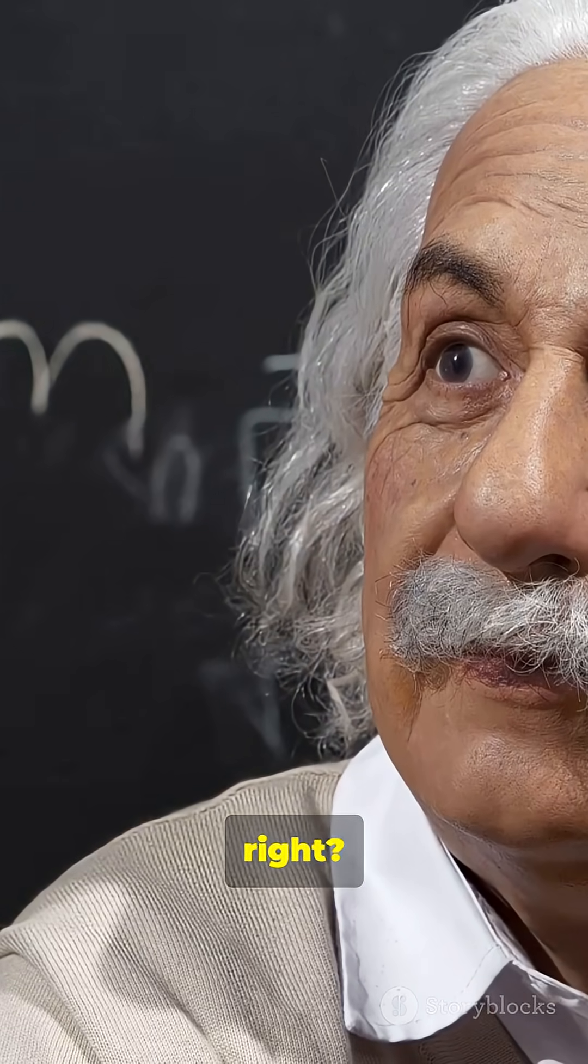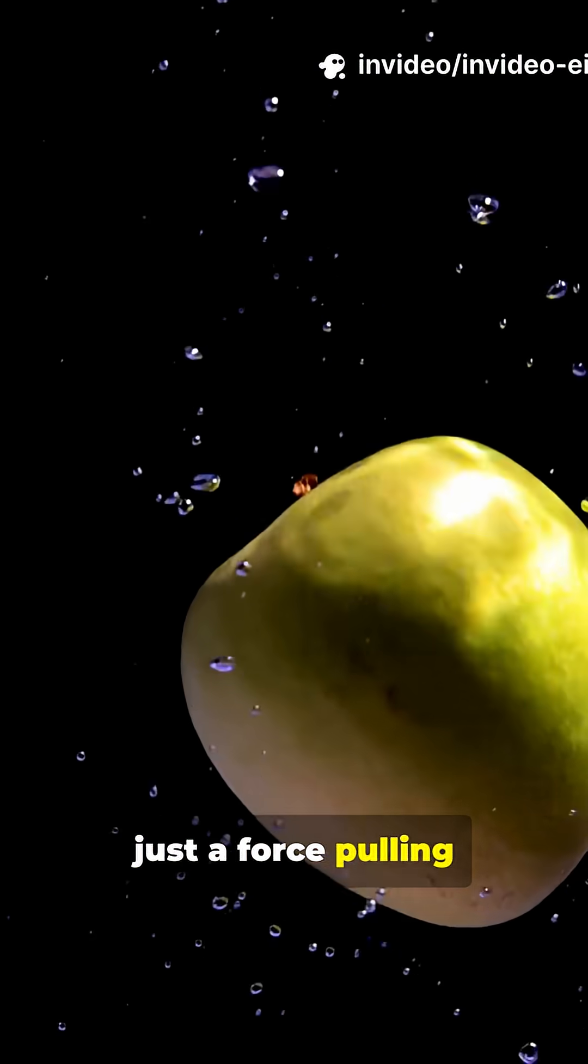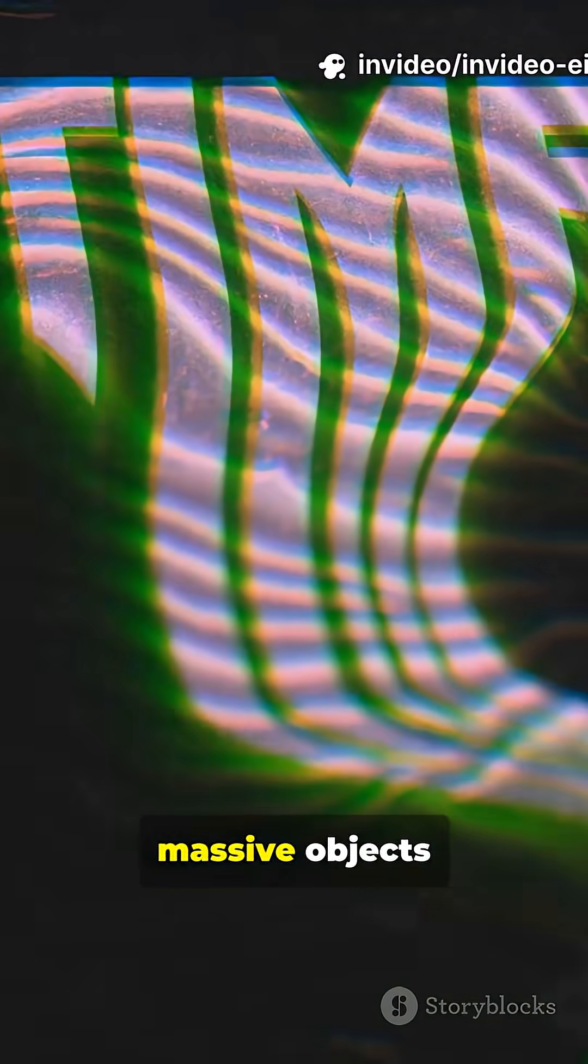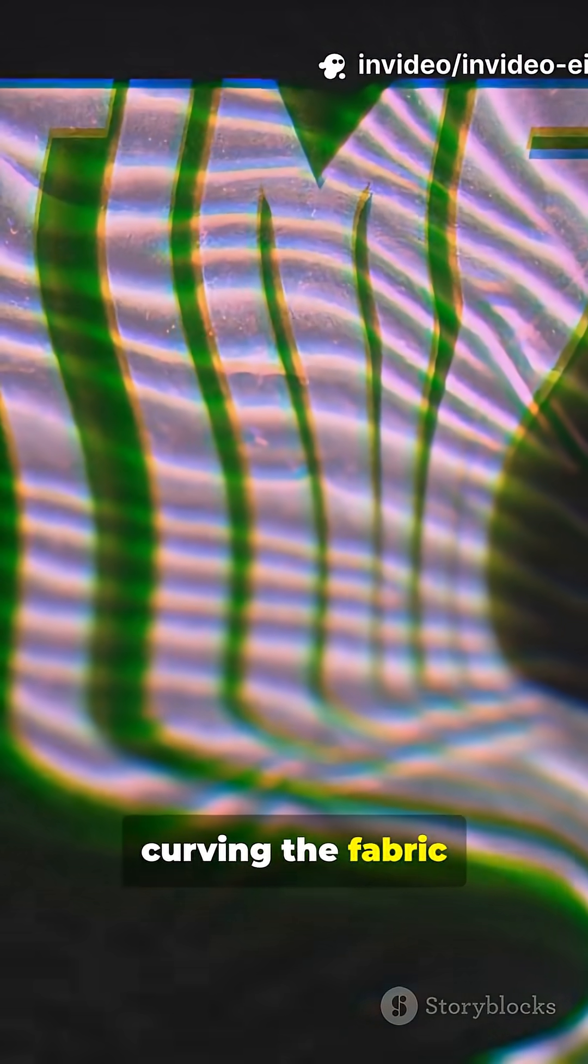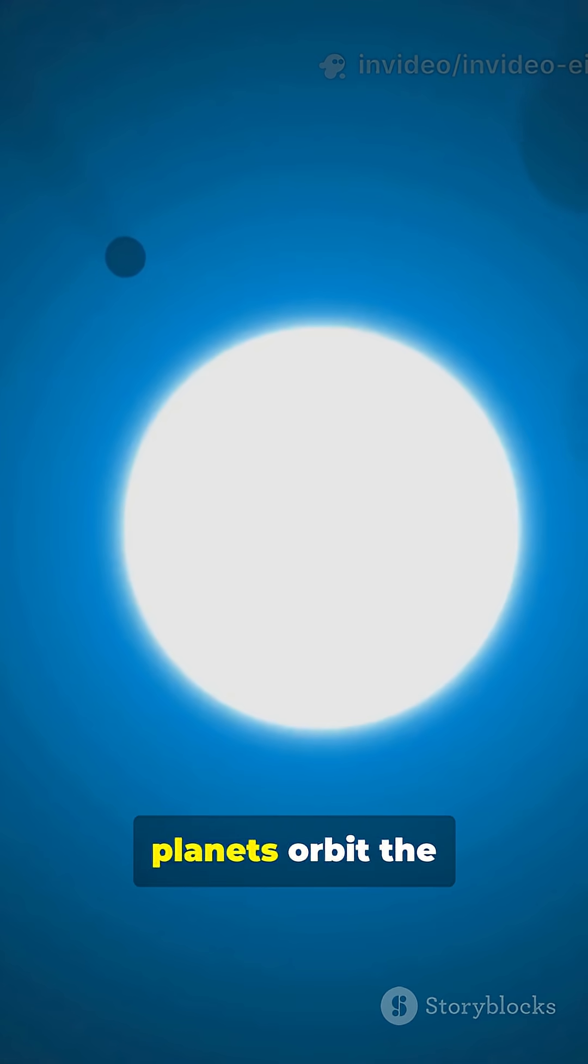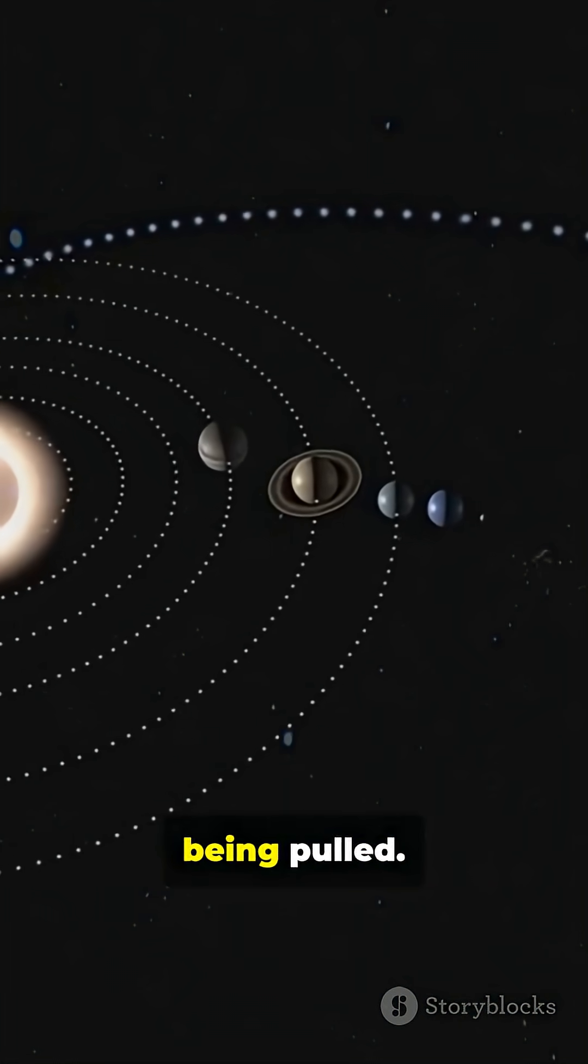Wild, right? And get this, gravity isn't just a force pulling you down. It's actually massive objects curving the fabric of space itself. So planets orbit the sun because they're following these curves, not because they're being pulled.